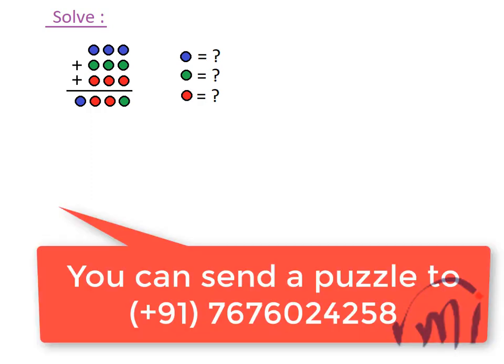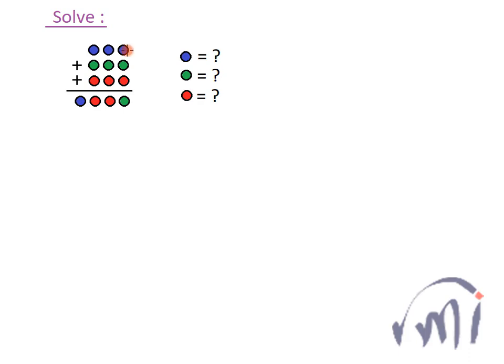Hi, so here we have one more puzzle which we are going to solve. Here we have three numbers and each of them is a three-digit number and all the three digits of that number are same and we have to find all the three different digits which are used in this problem.